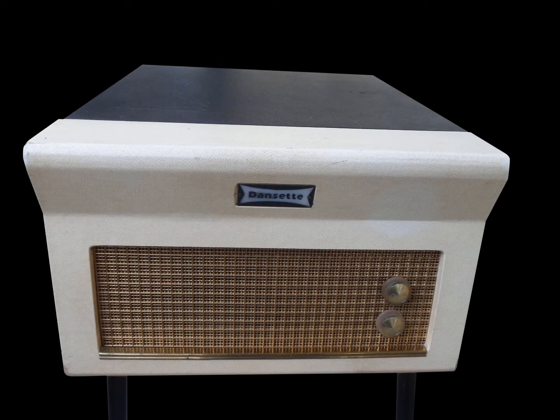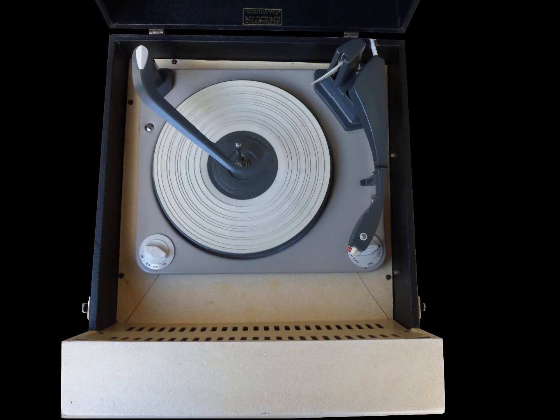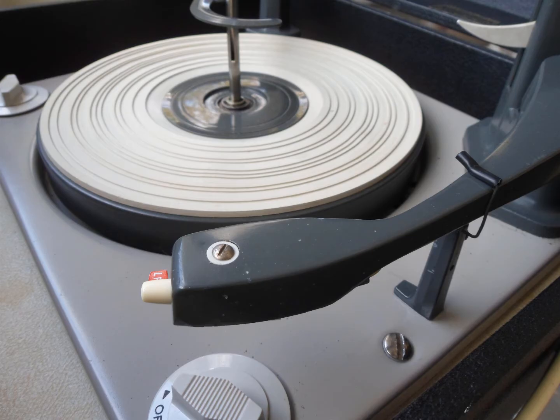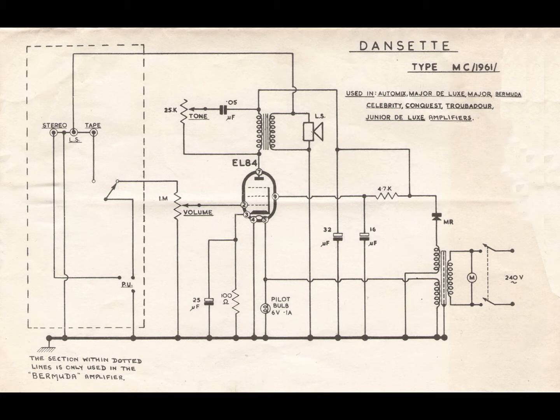Here we have the Danset Major Deluxe 21 record player. This one uses an MC 1961 circuit which has the EL84 pentode valve, also found in other record players such as Bermuda and Celebrity.